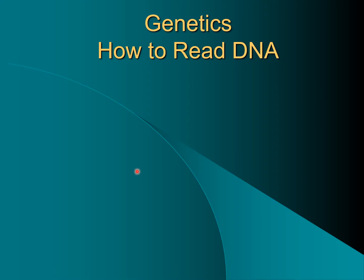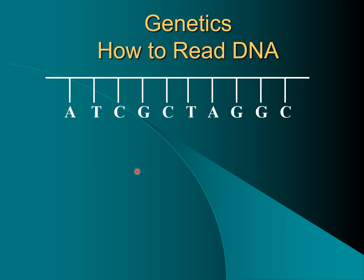First up, it's easier to actually learn how to read DNA than it is to understand what DNA actually does. So we're going to start with how to read DNA first. If you were paying attention in middle school, they should have taught you at least the basics of this. Suppose this is one side of DNA — just one half, one strand. Remember, DNA is a double strand, and on the strand are these letters used for symbolic representation: A, T, C, and G.